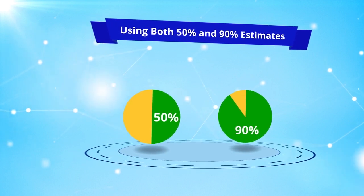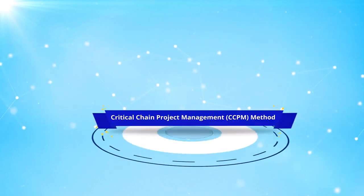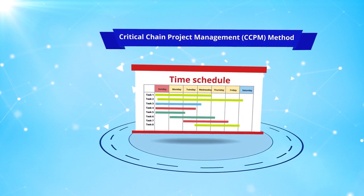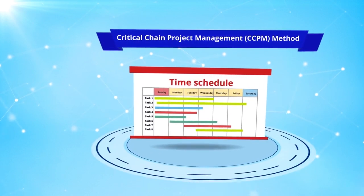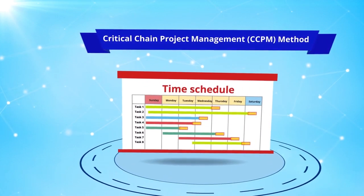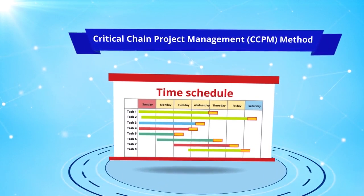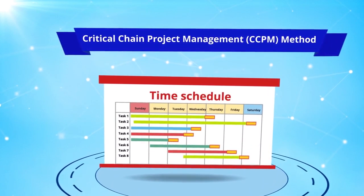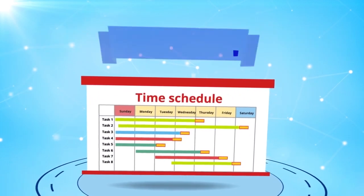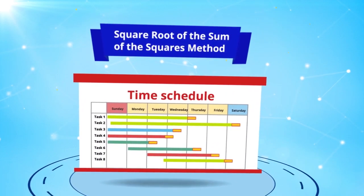Two common methods for calculating buffer are the critical chain project management, or CCPM, method and the square root of the sum of the squares method.